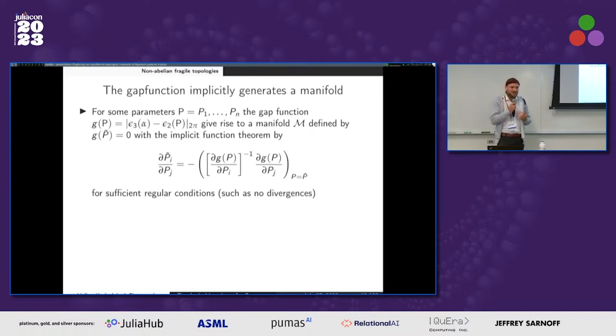Now it turns out exactly at the point where the gap closes, this gap function, if you just calculate the difference between the energies, this defines a manifold. So the gap manifold, where the gap closes, is a manifold, and you can use the implicit function theorem just to continue it.